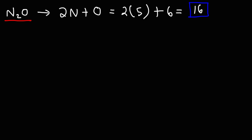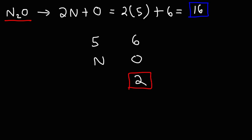Now let's talk about how to draw the Lewis structure, but here's a question first: which atom should be the central atom, oxygen or nitrogen? Nitrogen has five valence electrons and oxygen has six. Both like to acquire electrons. Oxygen wants two more to reach eight, so it likes to form two bonds. Nitrogen needs three more, so it typically forms three bonds. The best central atom is the one that can form more bonds, so we're going to go with nitrogen.